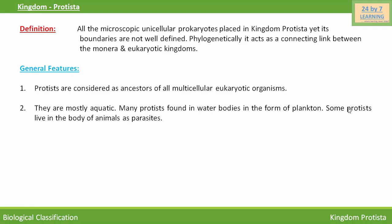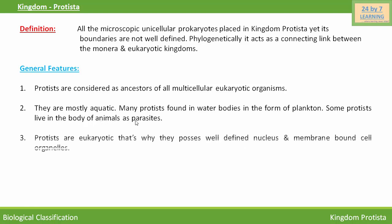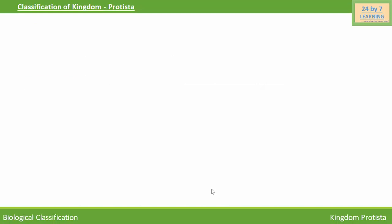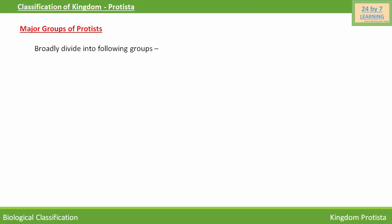They are mostly aquatic — many protists are found in water bodies in the form of plankton. Some protists live in the body of animals as parasites. Protists are eukaryotic, so they possess a well-defined nucleus and membrane-bound cell organelles. They reproduce by sexual as well as asexual means. Their mode of nutrition may be photosynthetic, absorptive, or parasitic.